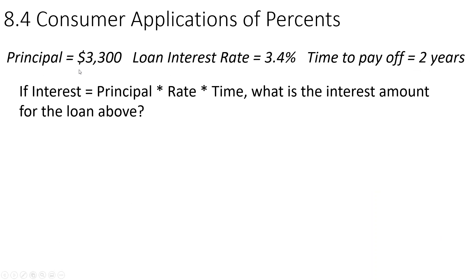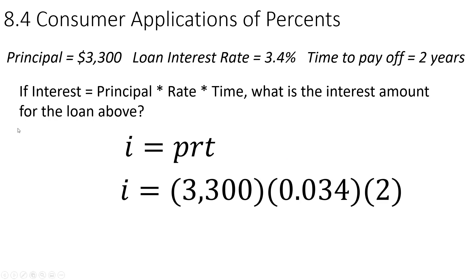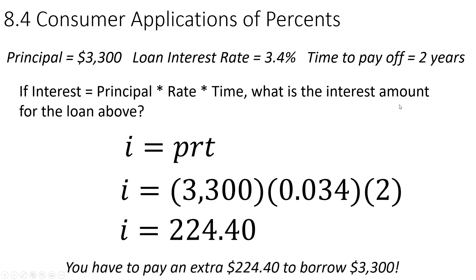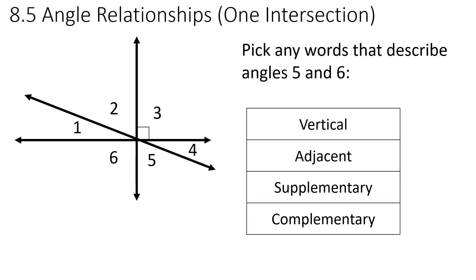So we have the principal amount $3,300, your loan interest rate, and your time to pay off. I equals PRT. You just want to remember that. The interest that you're paying is you're going to multiply these three values. 3,300 times 3.4% as a decimal times 2. So that's $224.20. So you have to pay an extra $224.40 to borrow $3,300.